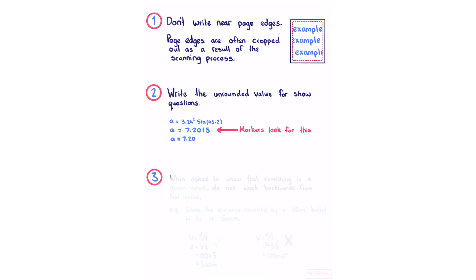Number three, when asked to show that something is a given value, do not work backwards from that value. For example, if you are asked to show the distance traveled by a 100 meters per second bullet in 5 seconds is 500 meters, you should use the other values to arrive at the value that you're trying to show, not work backwards from that value.